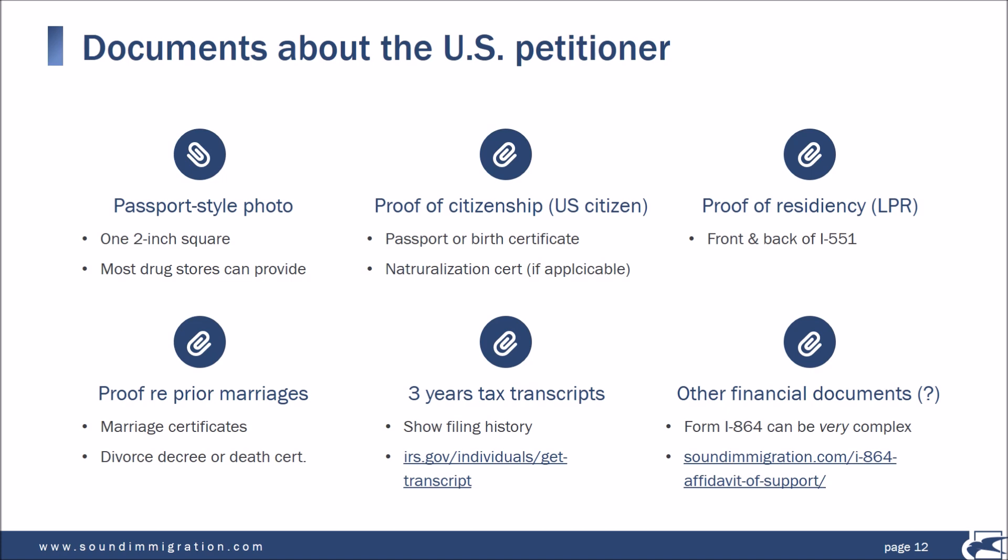For a petitioner who is a lawful permanent resident or green card holder, he or she has to provide a copy of both the front and the back of the current I-551, or green card. If the petitioner has been previously married, you'll want to provide copies of both the marriage certificates and also demonstration of how the prior marriage ended — that means either a divorce decree or a death certificate for the former spouse.